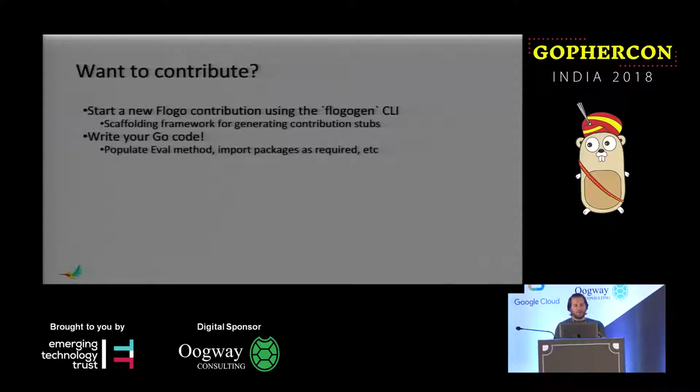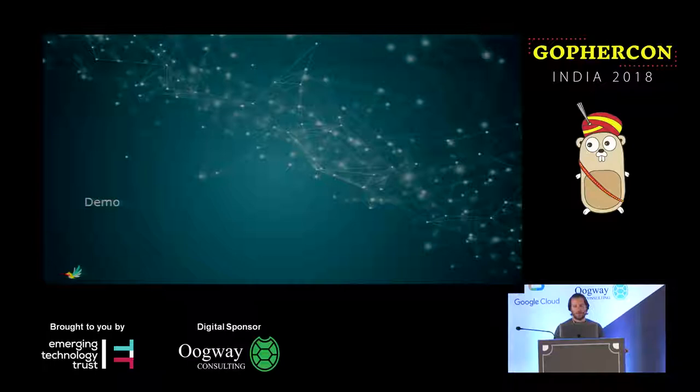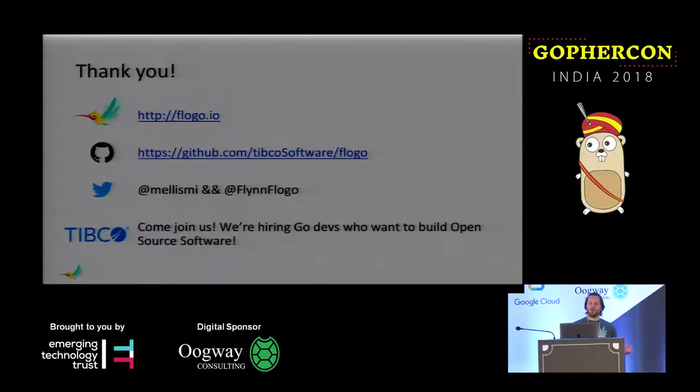To build an activity, we've got another CLI tool — flogo gen. flogo gen is just a scaffolding framework: basically 'flogo gen activity' plus the activity name you want to build, and that's pretty much it. Then you populate your eval method, import your packages, and just write your Go code. You can show that off and contribute it to our showcase — create a pull request on the repo, add your project to the showcase. We've got quite a few people doing that today. Thank you very much. You can check out FloGo on flogo.io — GitHub, it's all open source, BSD license, Twitter handles, and of course TIBCO, where we are hiring specifically for our open source projects.